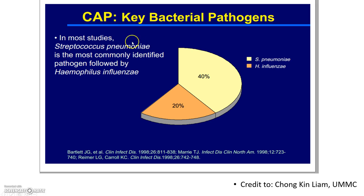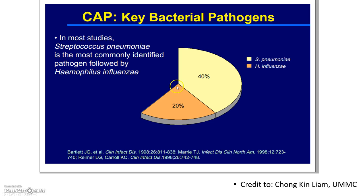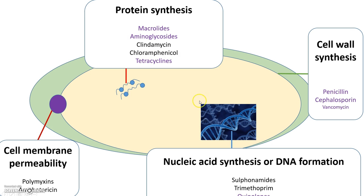Besides viruses, there are other organisms that cause pneumonia. The main focus today is on bacterial causes. In most studies, Streptococcus pneumoniae is the most commonly identified pathogen, followed by Haemophilus influenzae. When talking about antibiotics, it's useful to have an overview of the antibiotics used to treat pneumonia.